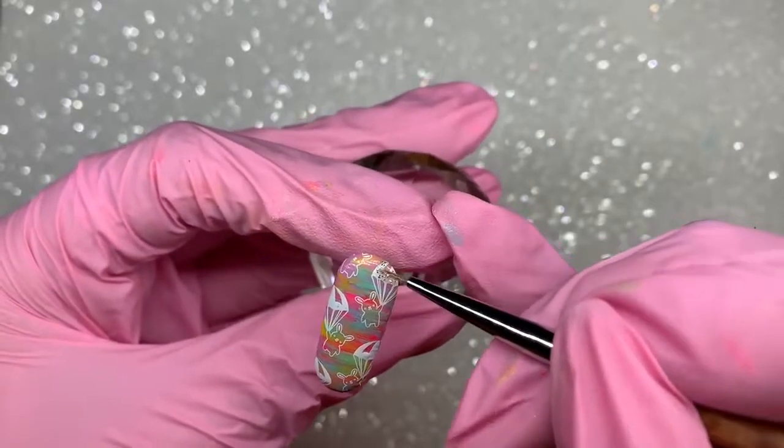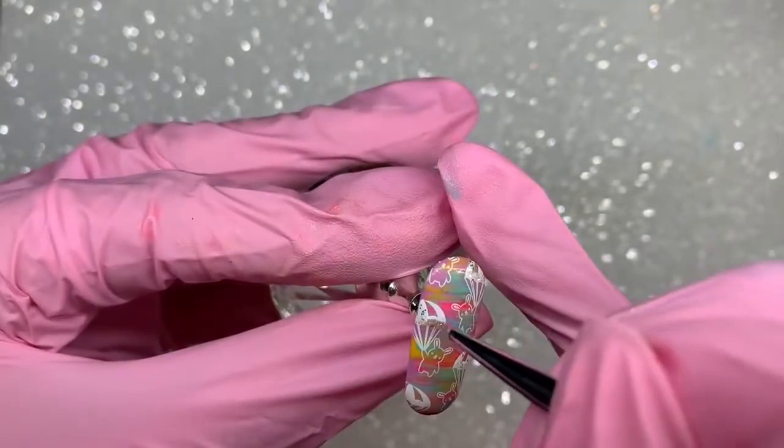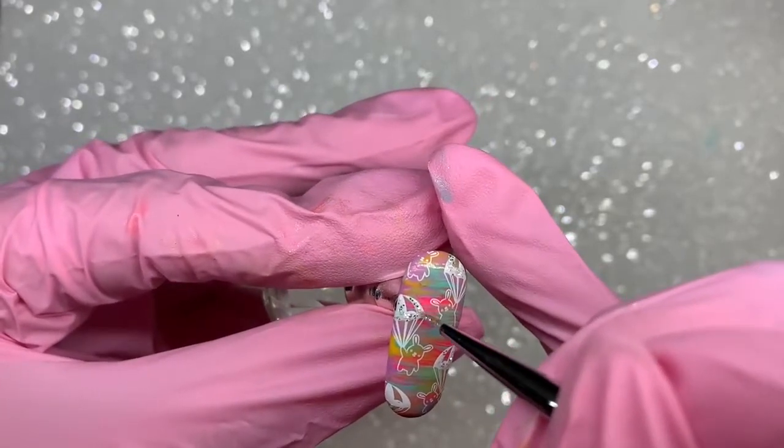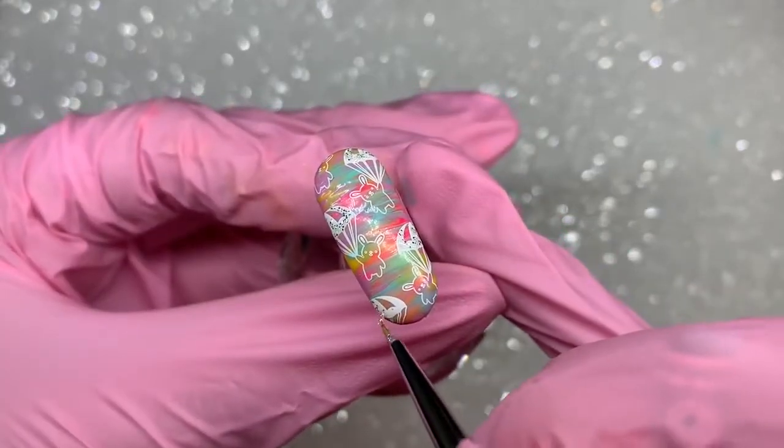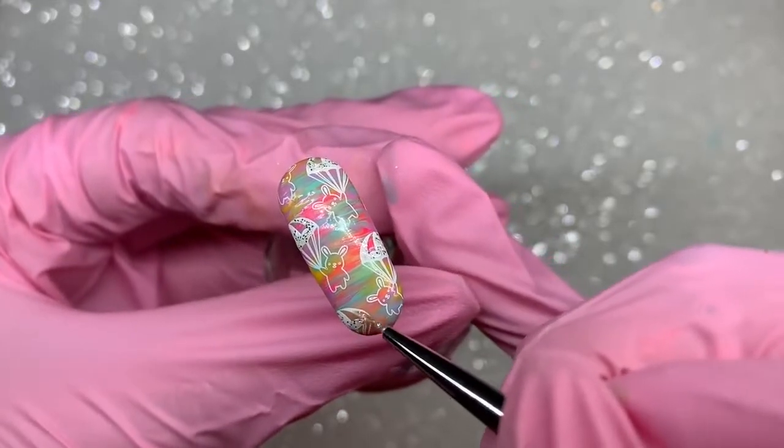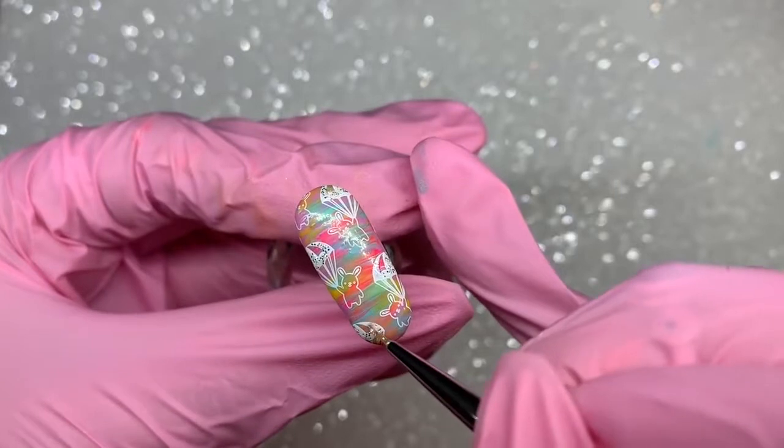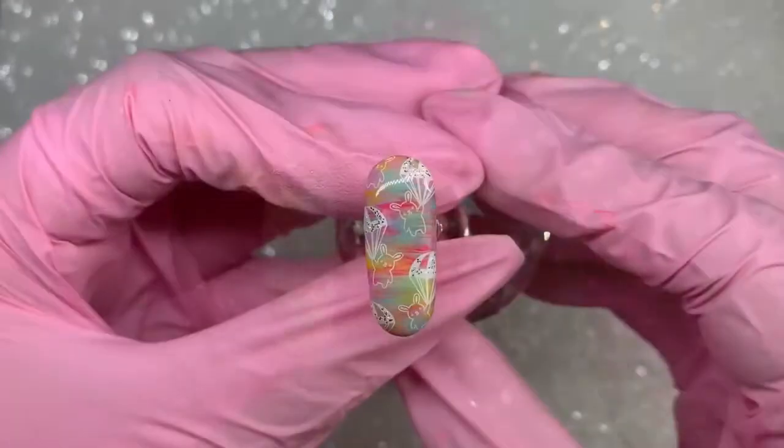Of course, I've got to add a little bit of sparkle. I'm going in with the little tiny detailer brush. Again, this is just from AliExpress, it's a super cheap set of nail art brushes. I'll leave them linked in the description box down below. I'm just going over the parachutes, adding a little bit of sparkle.